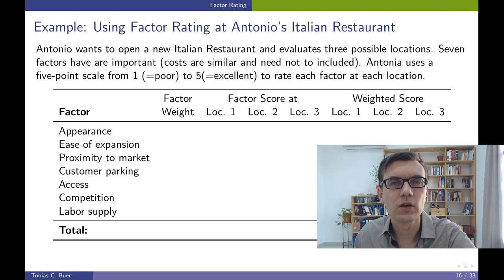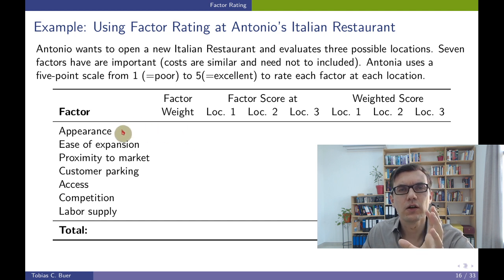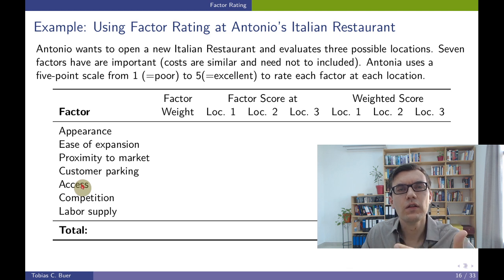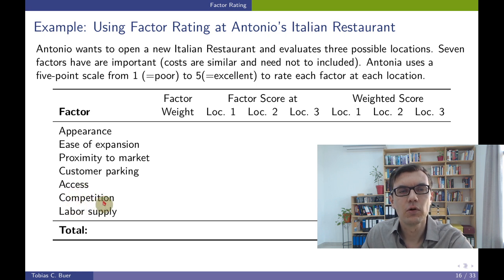Let's have a look at an example: Antonio's restaurant. Antonio wants to open a new Italian restaurant and has already identified the seven most important factors. The factors are: appearance of the place, ease of expansion, proximity to market, customer parking, access to the location — for example, how easy it is to enter if you use a wheelchair or have a stroller — competition, and labor supply.